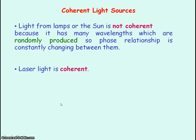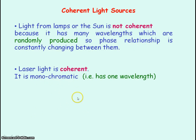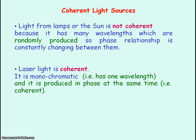Laser light is coherent. It is also monochromatic — 'mono' meaning one, 'chromatic' meaning color — so it has only one wavelength. The laser light is all produced in phase at the same time, so all the laser light has this fixed phase relationship of being in phase, making it coherent.